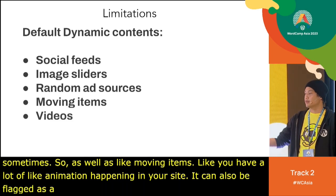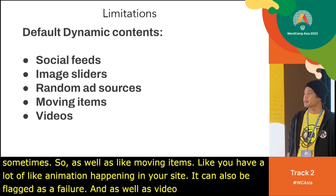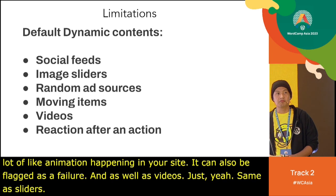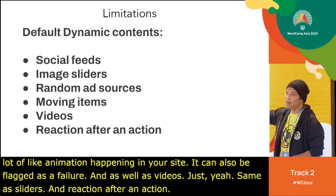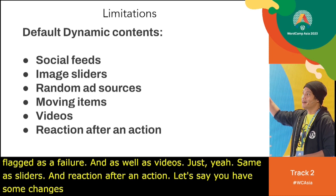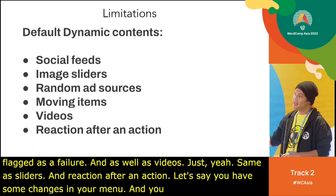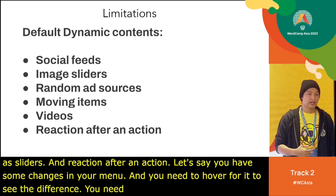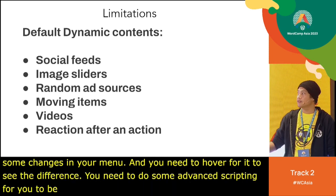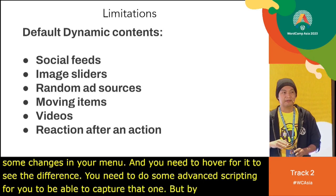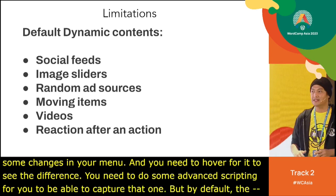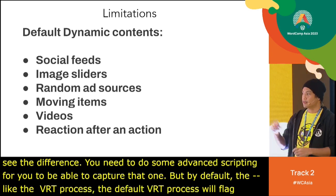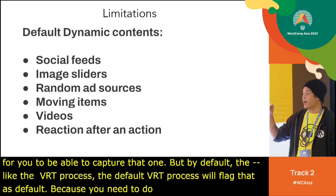Other limitations include moving items with animations, which can be flagged as failures, as well as videos (similar to sliders). Interactions requiring user actions — like hovering over a menu to see a dropdown — require advanced scripting to capture; the default VRT process will flag those as failures since it doesn't perform those actions automatically.